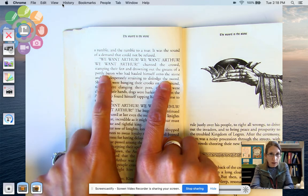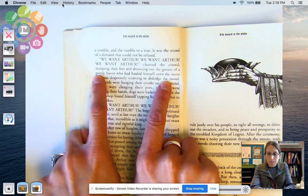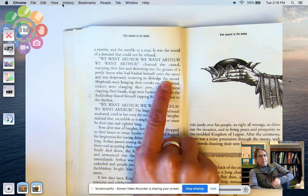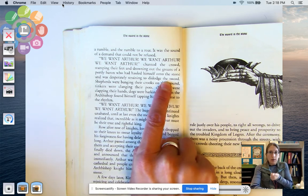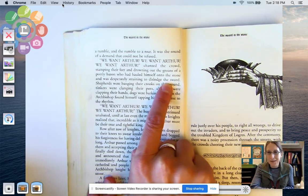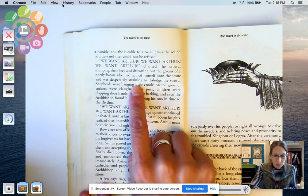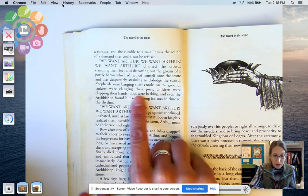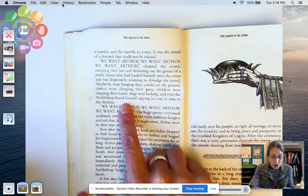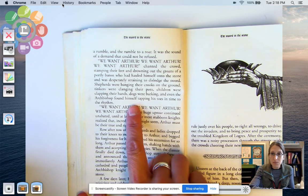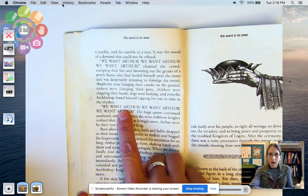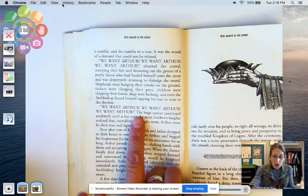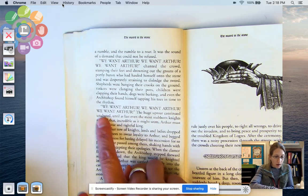Kind of funny. Shepherds were banging their crooks on the ground. Tinkers were clanging their pots. Children were clapping their hands. Dogs were barking. And even the archbishop found himself tapping his toes in time to the rhythm. We want Arthur. We want Arthur. We want Arthur. The huge uproar continued unabated. What's that mean? Yeah, without stopping, just kept going.